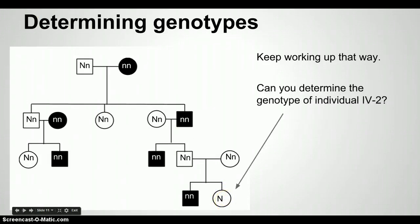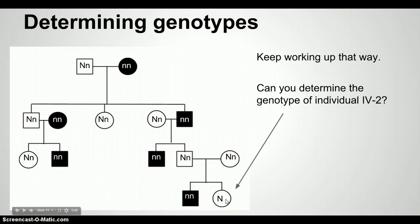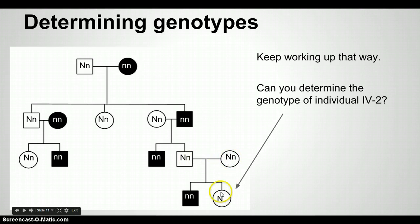Individual 4-2 could be homozygous dominant, having inherited the dominant allele from both parents, or she could be heterozygous, inheriting the dominant allele from one of her parents and the recessive from the other parent.